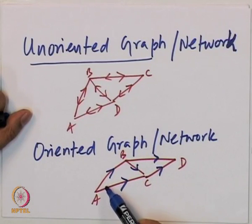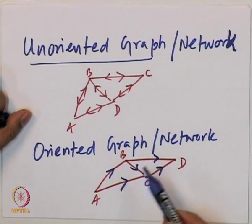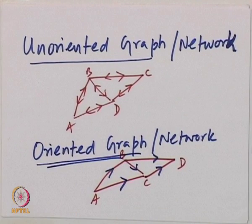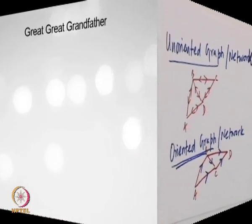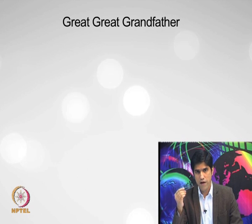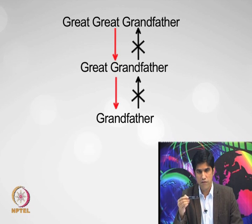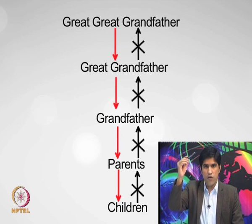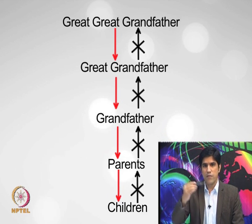You might ask why you have to choose direction A to B and not B to A — you are free to do that, but once you do, your assumptions are fixed. You can think of an oriented graph like a family tree: starting from a great-great-grandfather, then great-grandfather, grandfather, parents, and children. There is always a transition from one level to another. However, in electromagnetic problems there is no natural forcing — you can define a direction and follow it freely.